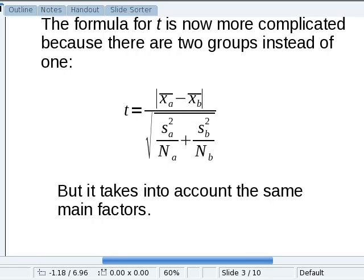The formula for t is now a little bit more complicated. Actually, it looks a lot more complicated because there are two groups instead of one. But it's really not that much more difficult because it's taking into account the same main factors that we needed for the dependent samples.